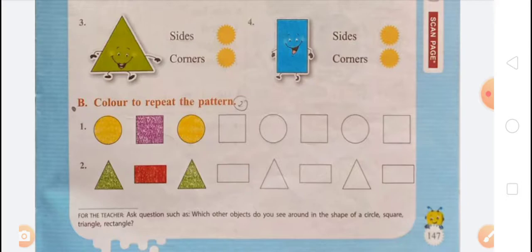We have to color all the circles yellow and all the squares purple. First circle: yellow color. Second square: purple color. Third is a circle, so we color it yellow. Next is a square, so purple. Then circle: yellow, and the next square: purple.